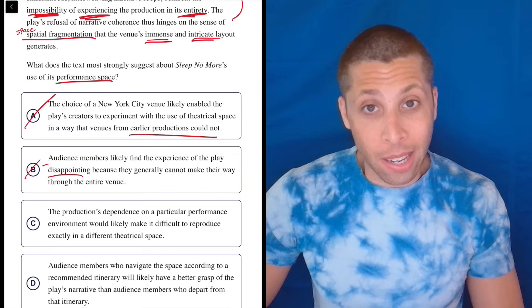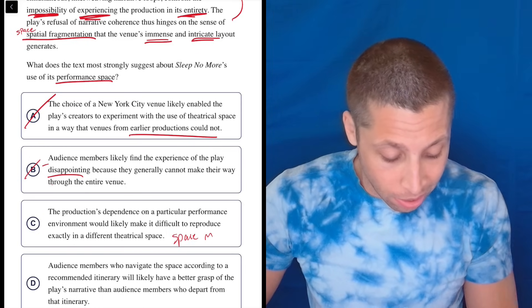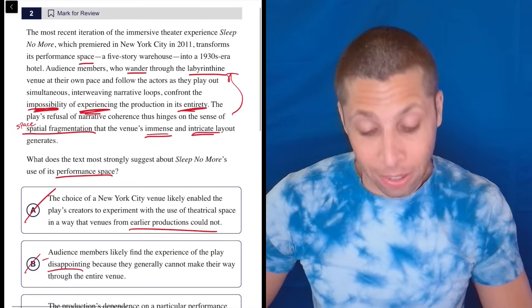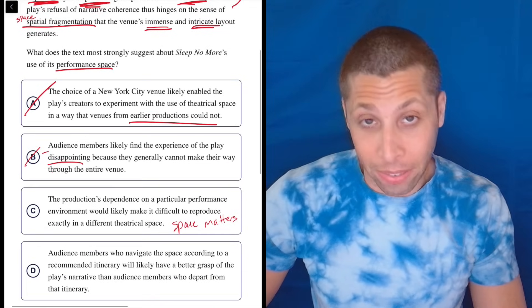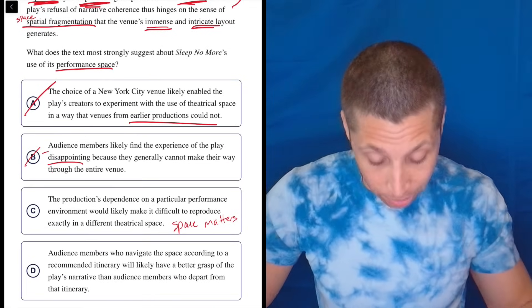Well, I mean, my dumb summary of choice C is it's saying the space matters, and that seems to be an important part of the original passage. So I don't know. Let's leave it in. I feel like it's making an assumption that I don't love, but okay. Let's see what we got.